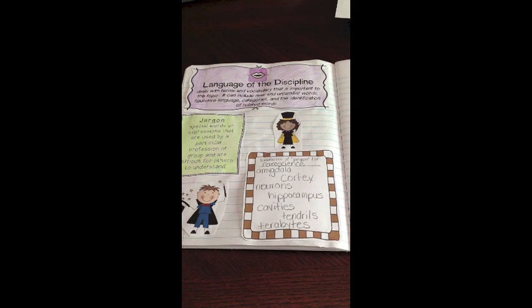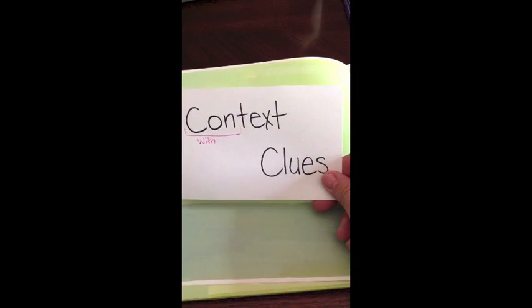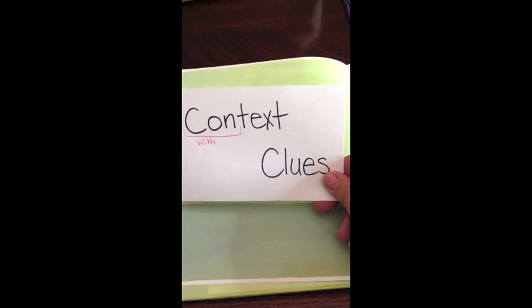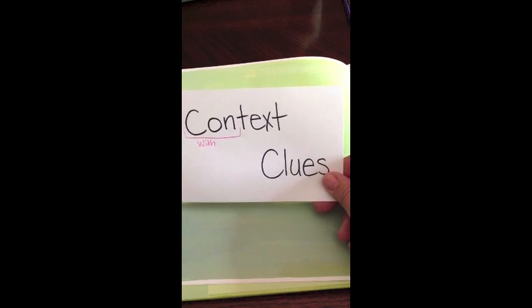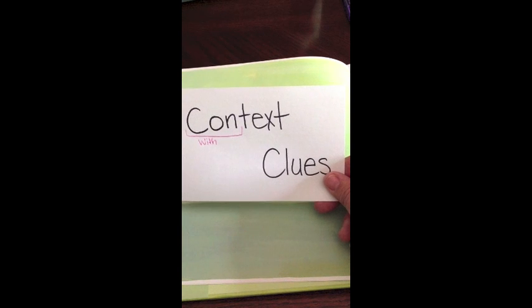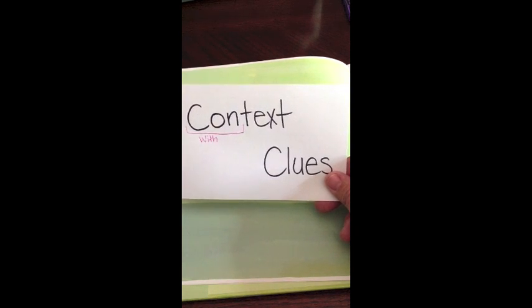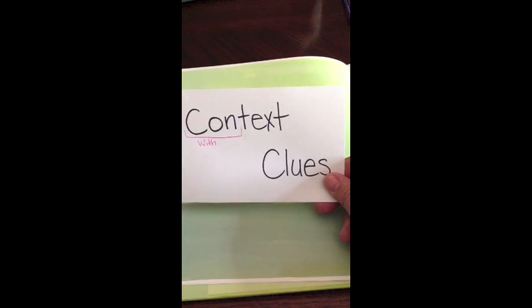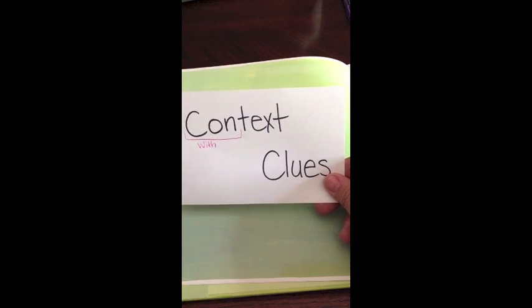Be sure that you include this information in your Comprehension Connections notebook so that you can refer to it later as needed. Let's practice working with context clues. The prefix con means with, and we know what a text is. So context clues are clues that are within a text that we use to help us infer or try to guess the meaning of a word.